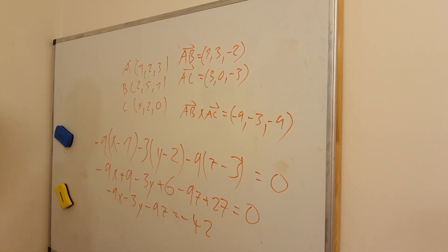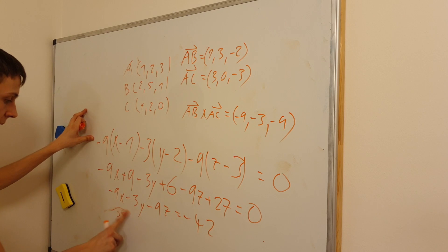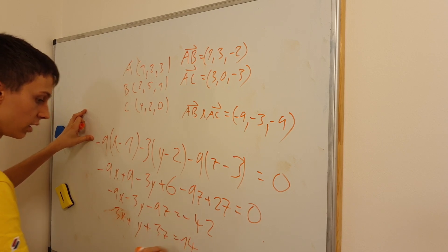We push that number to the right side. Now we can divide both sides by 3, and we can divide both sides by minus 3. So we have 3x plus y plus 3z equals 14.